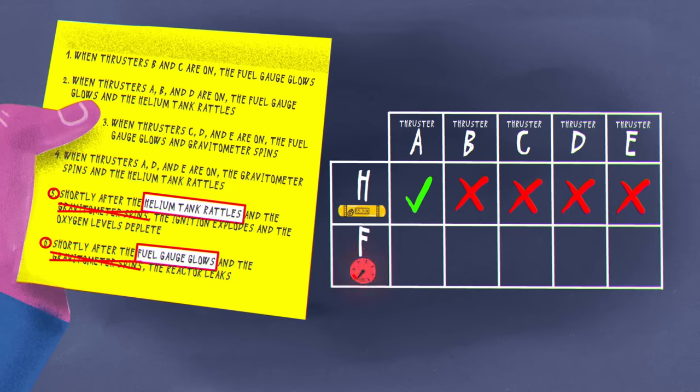Now, what causes the glowing fuel gauge? From the fourth test run, we know it can't be thrusters A, D, or E, so is the culprit B, C, or each of them separately? The answer can be found in the second and third test runs. The fuel tank glowed in both, but B was activated in one and C in the other. That means the B and C thrusters each independently make the fuel tank glow.